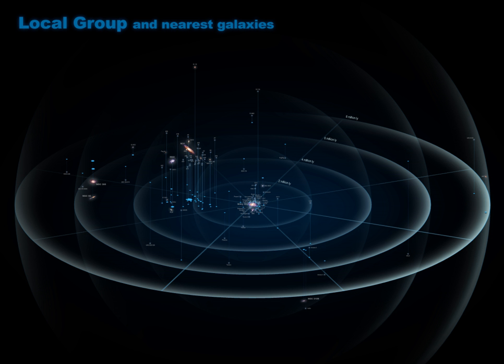The three largest members of the group are the Andromeda Galaxy, the Milky Way, and the Triangulum Galaxy. The larger two of these spiral galaxies each have their own system of satellite galaxies.